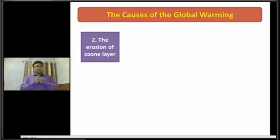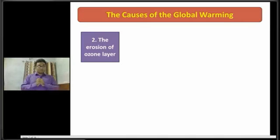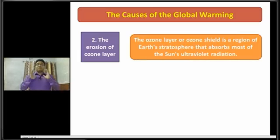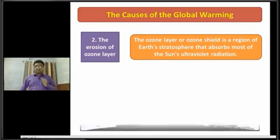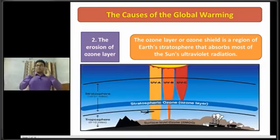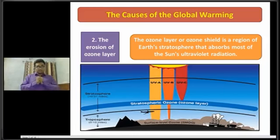Ultraviolet rays are not good for human health. The ozone layer, or ozone shield, is a region of Earth's stratosphere that absorbs most of the sun's ultraviolet radiation. Now I am going to show you a picture of the ozone layer. That's all about the second cause of global warming.